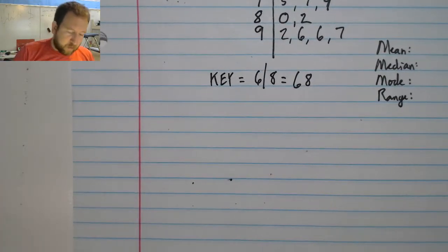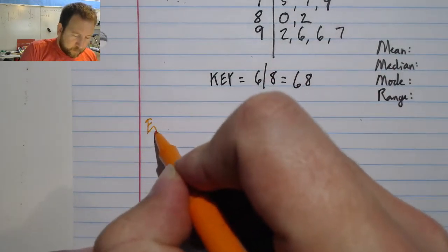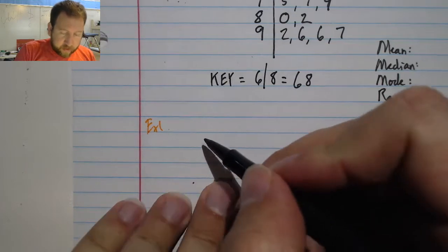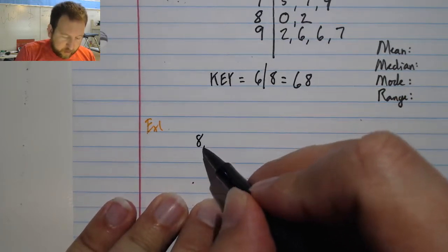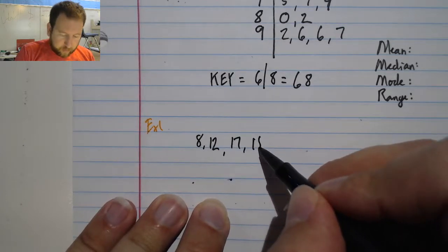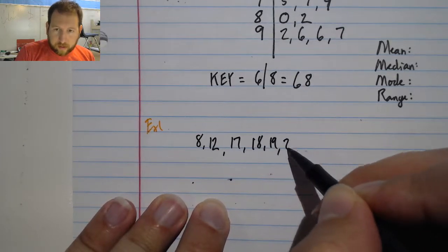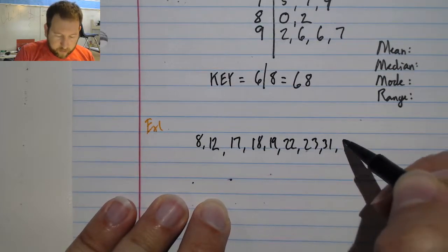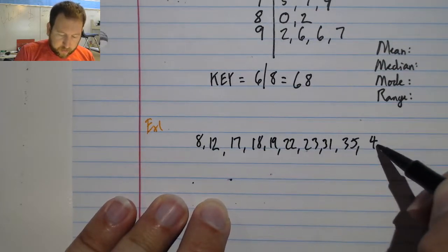Okay, let's look at example one. This case, the data that we'll look at is already sorted for us, which is nice. We're going to have 8, 12, 17, 18, 19, 22, 23, 31, 35, and 40.